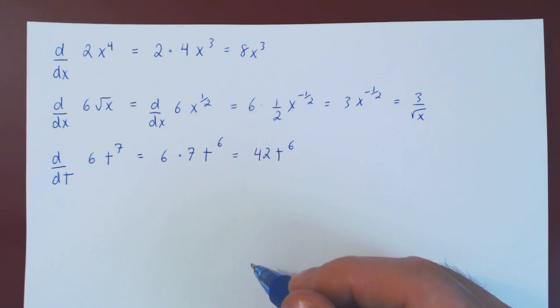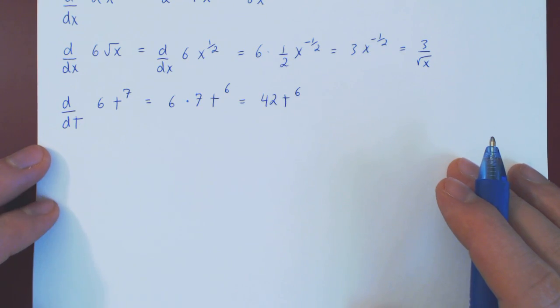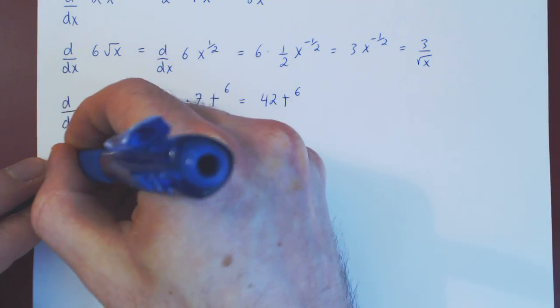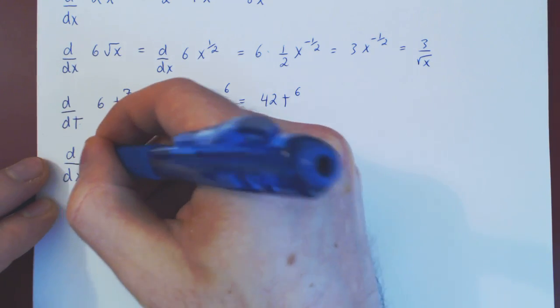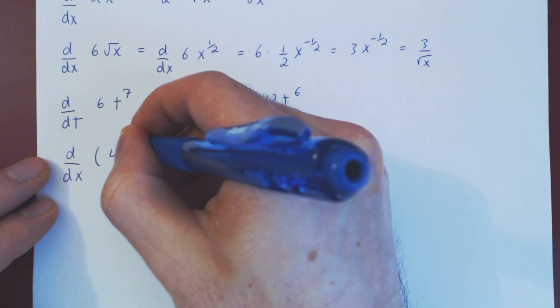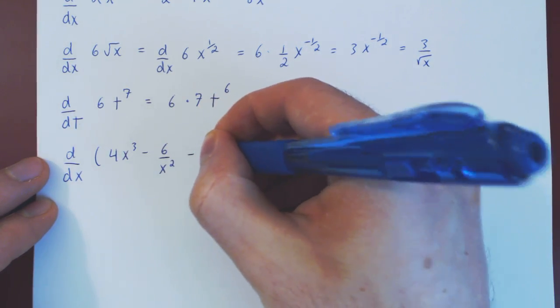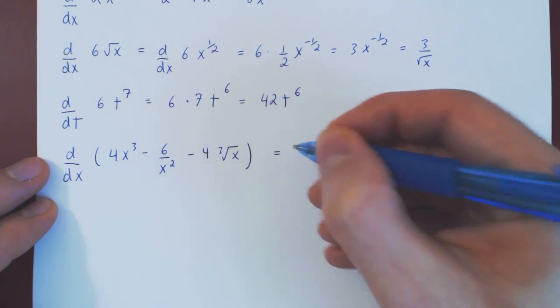Now what about the derivative over a sum and or difference of functions? Let's look at this example. The derivative with respect to x of 4x cubed minus 6 over x squared minus 4 cube root of x.